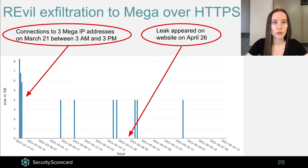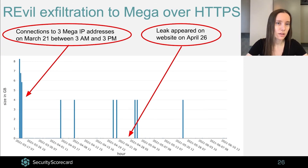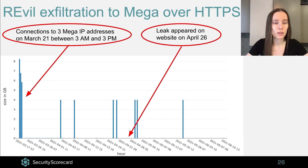The first use case is a potential data exfiltration performed by the REvil ransomware to the MEGA cloud over HTTPS. The image illustrates the number of gigabytes exchanged hourly between an IP address belonging to a company infected by REvil and various other IP addresses. We can observe a spike on March 21st between 3am and 3pm, showing communication between the infected company's IP address and three other IP addresses associated with MEGA cloud. One month after this spike, on April 26th, data belonging to this company was leaked on REvil's Happy Blog. In the image we can also observe a few 4GB spikes; however, given their regular prevalence, we assume this is just the company backing up their data.